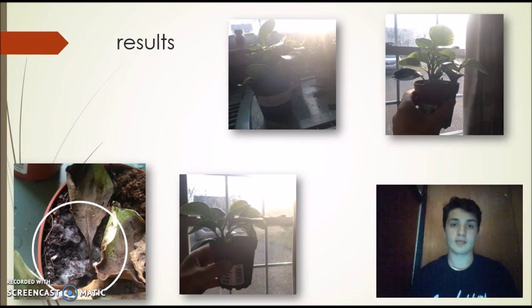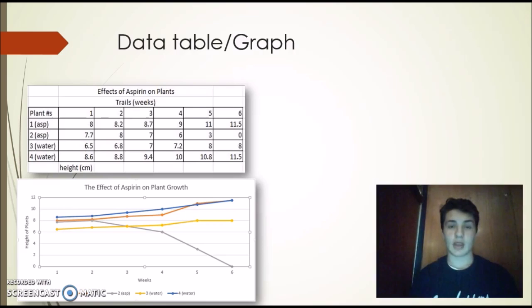After the first three weeks, my plants had grown steady and healthy. But after the second three weeks, one of my plants started to die and it grew a fungus on it, as you can see in the bottom left corner. As my data shows, all my plants grew at a steady, healthy rate, except for the one outlier who grew a fungus on it and started to die.